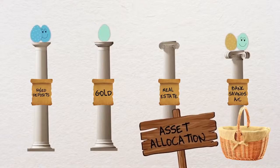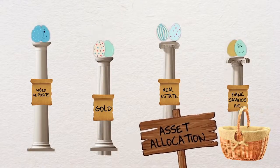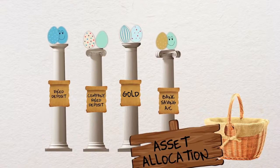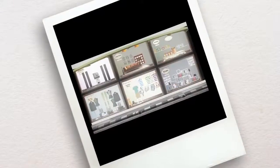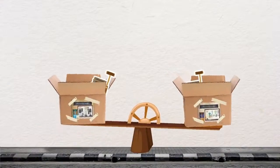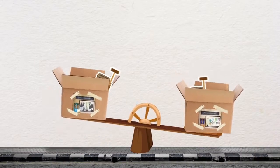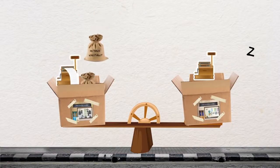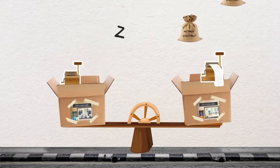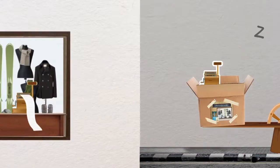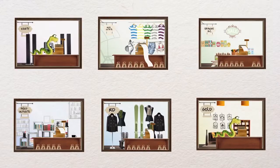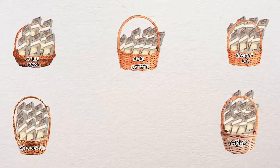Asset allocation basically involves deciding what percentage of investable funds is to be invested in different asset classes. Because different asset classes perform differently, asset allocation is of utmost importance and is key to determining your overall investment performance. Just like the story of the department store, asset allocation works best when asset classes that move in opposite directions are combined — lowering fluctuations in investment returns, because when one asset class underperforms, the other often compensates for it. So plan wisely and use asset allocation to diversify risk and generate stable returns over your investment period. Remember: different baskets, safer eggs.